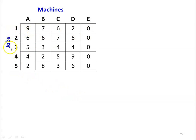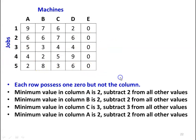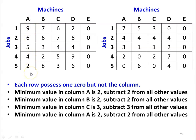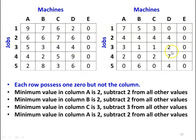Checking each row: each row has 1 zero because the last column has 0. Now subtract the column minimum. In column A, the lowest value is 2; subtract 2 from all values: 7, 4, 3, 2, 0. In column B, minimum is 2; subtract: 5, 4, 1, 0, 6. In column C, minimum is 3; subtract: 3, 4, 1, 2, 0. In column D, minimum is 2; subtract: 0, 4, 2, 7, 4. Column E remains as is.